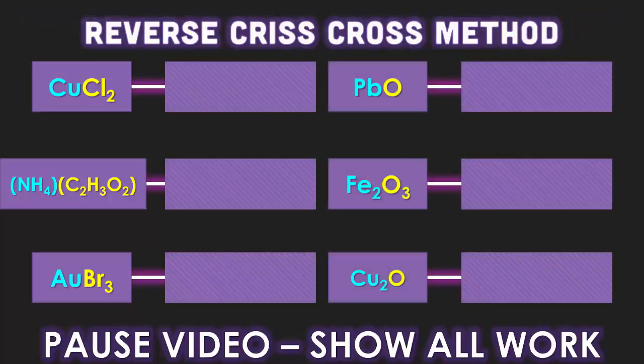Right now, again pausing the video, we want you guys to use the reverse criss-cross method to determine these names based off of their chemical formulas. Make sure you guys are using Roman numerals if you're using a transition metal. Good luck.